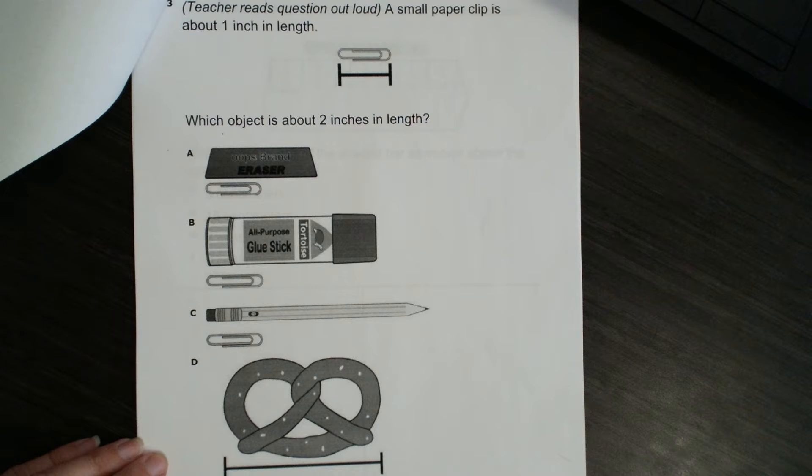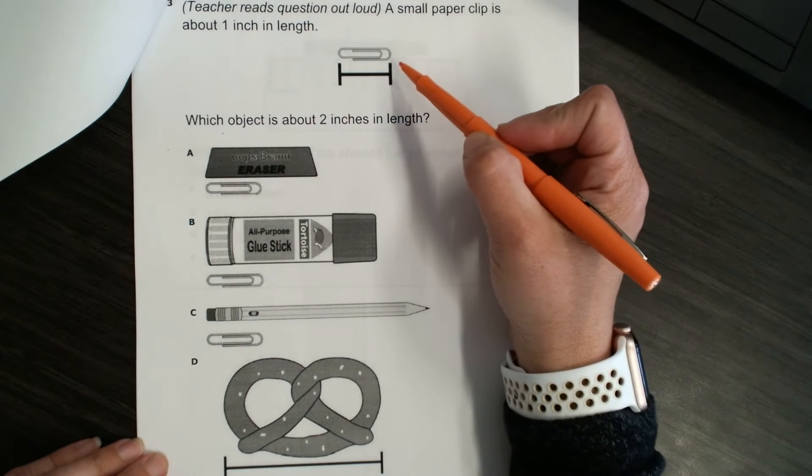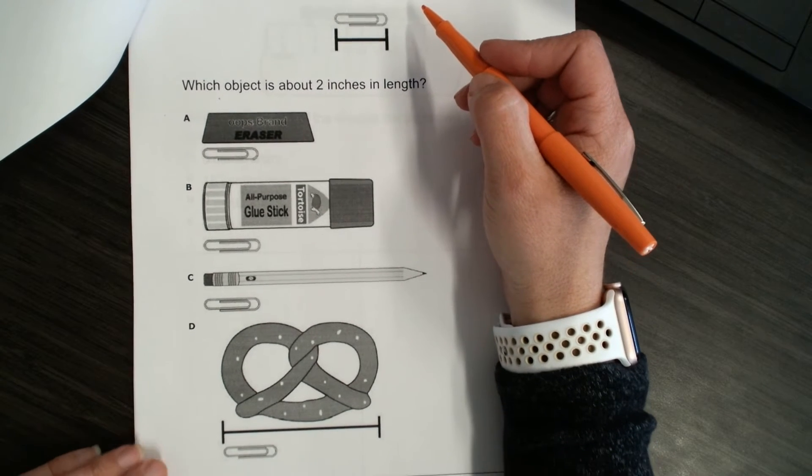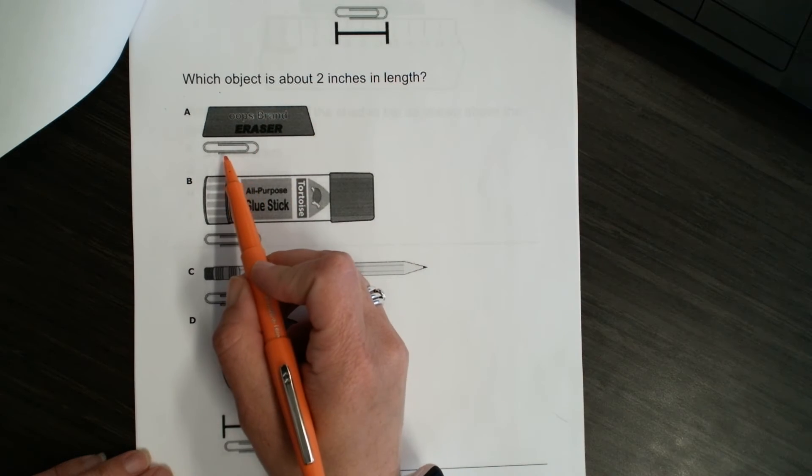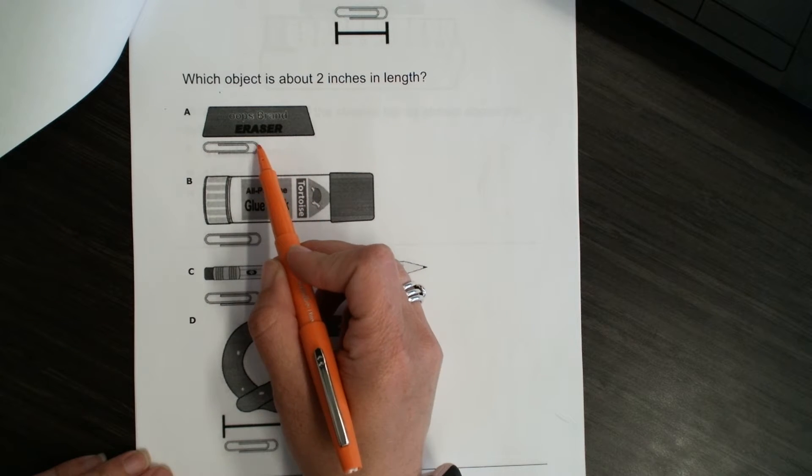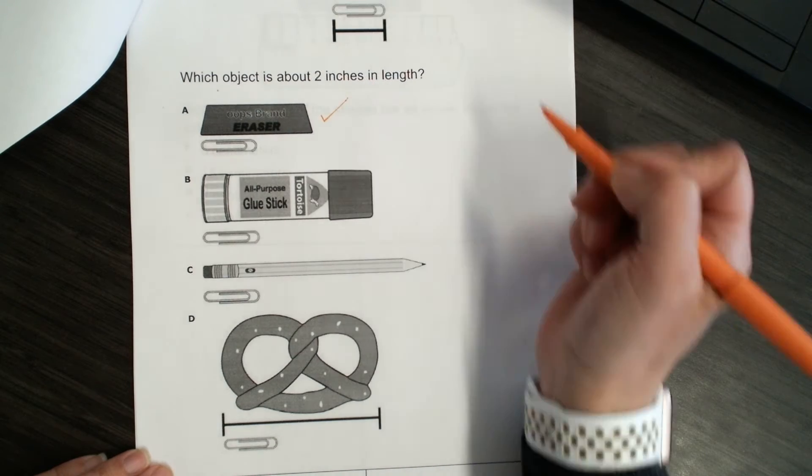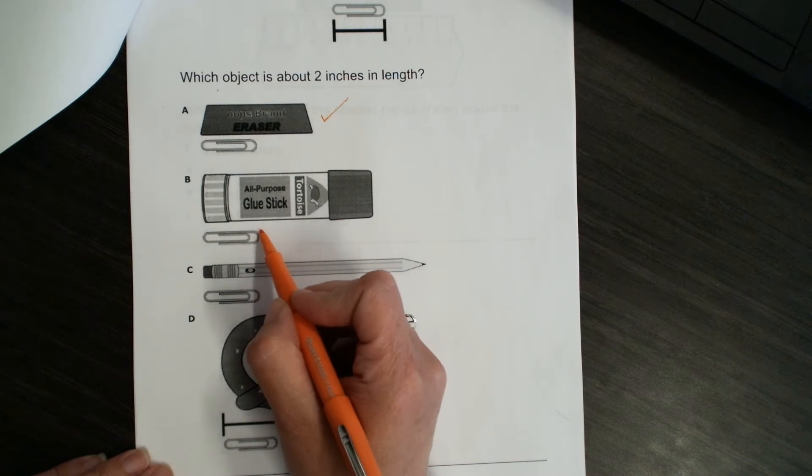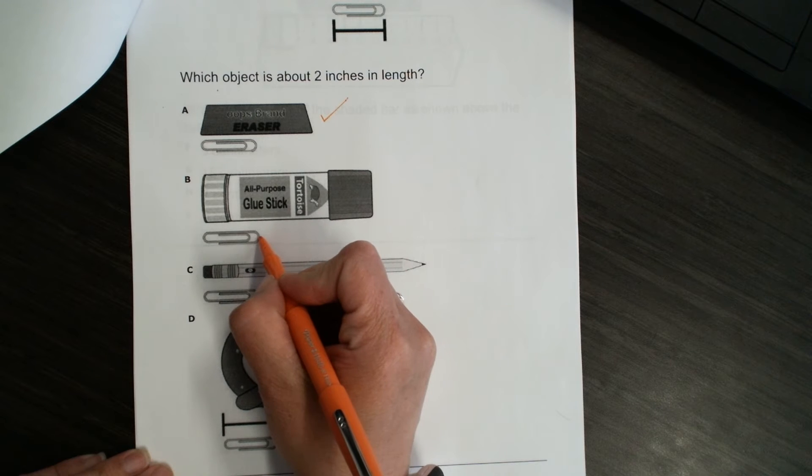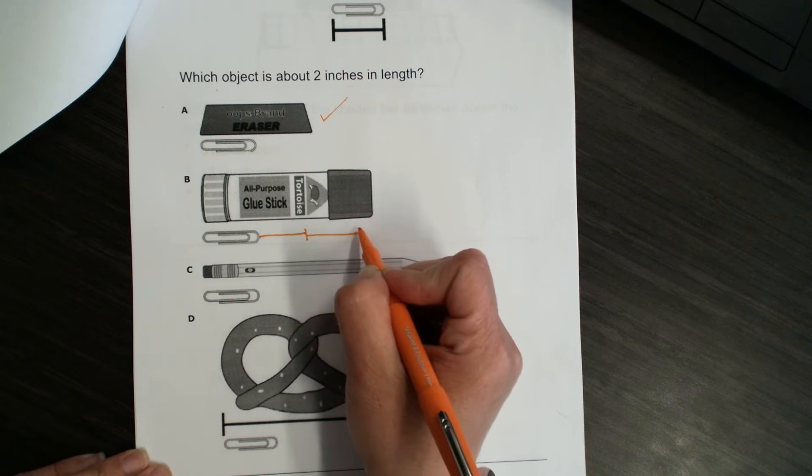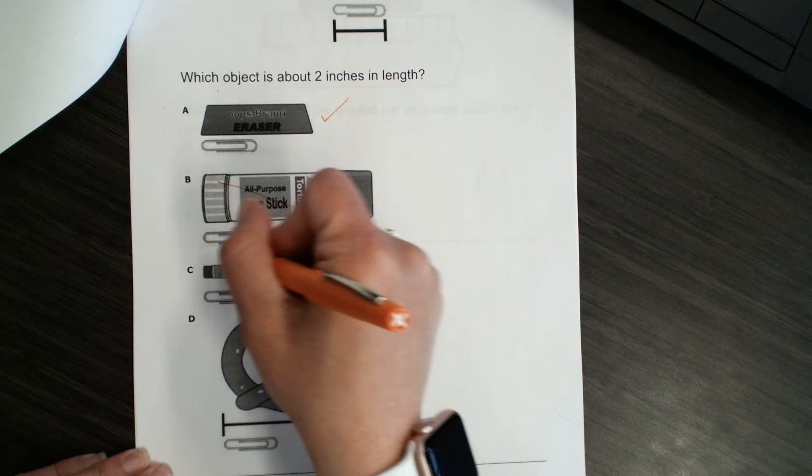Number three. A small paper clip is about one inch in length. Which object is about two inches in length? So, let's look. We have our paper clip, and it tells us it's about one inch. So, let's look at our objects. Okay, we have an eraser with our paper clip. Do we think we could get one more paper clip to measure two inches? I think we probably could. Good. Let's put a check there and double-check the rest. Okay, let's see. If I drew about the length of another paper clip, that would be here, and then I'd have to do another one.